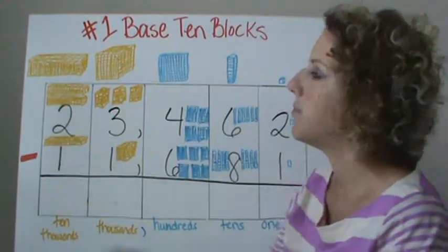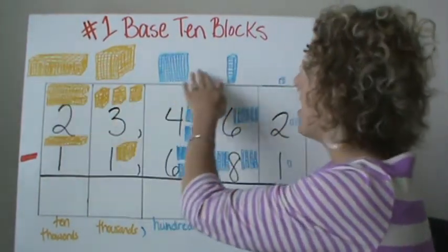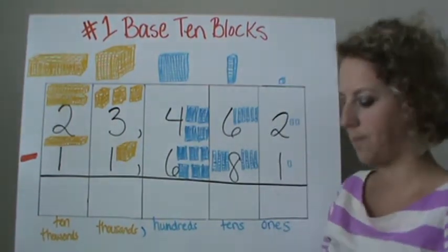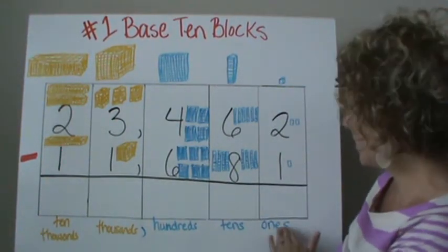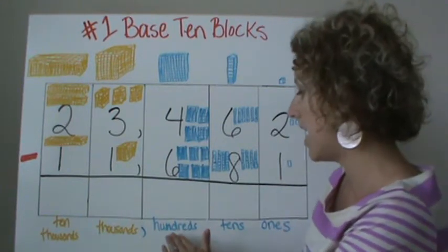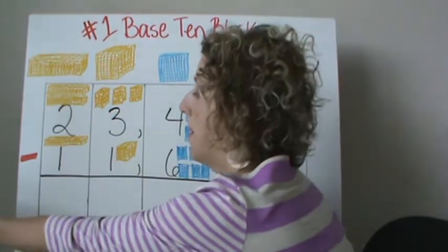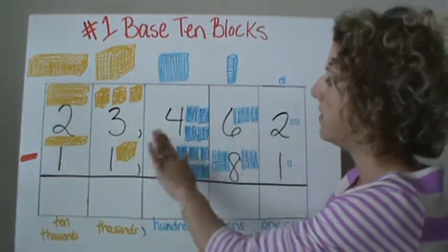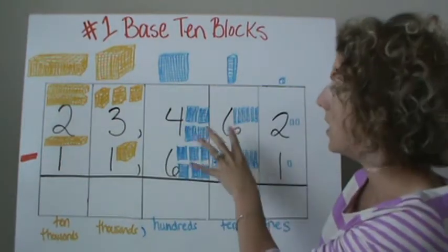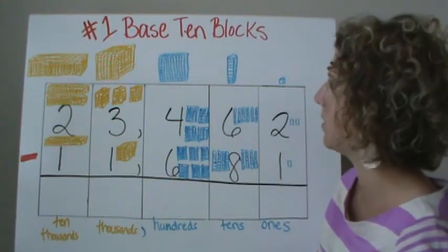The first method we're going to look at is subtracting using base ten blocks. We have our blocks up here, and I also have a few examples to show you. So let's review our place value. We have ones, tens, hundreds, thousands, ten thousands, hundred thousands, millions. I've only chosen to go up to ten thousands today so that we can fit it all on the board and see how we're really subtracting these numbers.